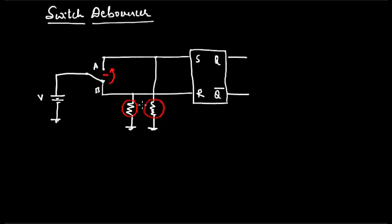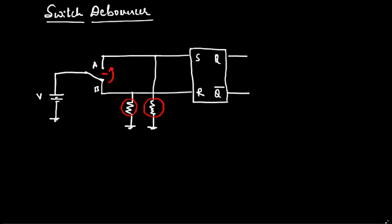They will pull high impedance state to 0 volts. Now point B is at 1 volt and point A is at 0 volts. So we will have R as 1 and S as 0. In this case the latch is reset. So we will have 0 and 1 at the output.